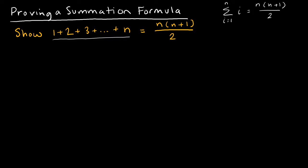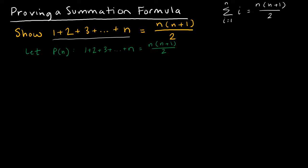When I start a proof by induction, I have to specify what it is that I'm trying to prove — I have to tell what that p of n is equal to. So I'm going to let p of n represent 1 plus 2 plus 3 all the way through n is equal to n times n plus 1 divided by 2. It's important that I do that step because it says here's what I'm trying to prove, so make sure that you are explicit about that step.